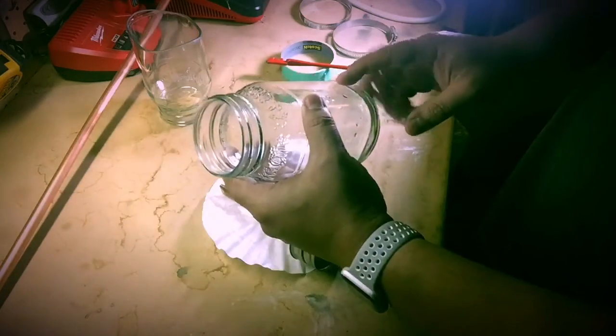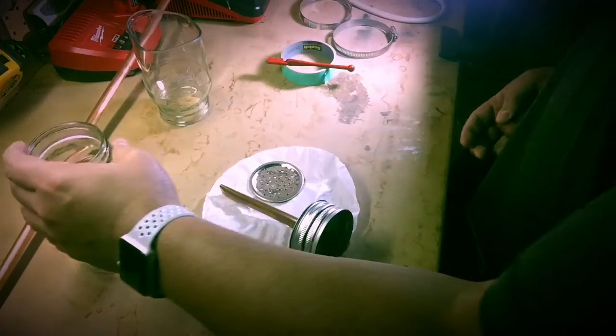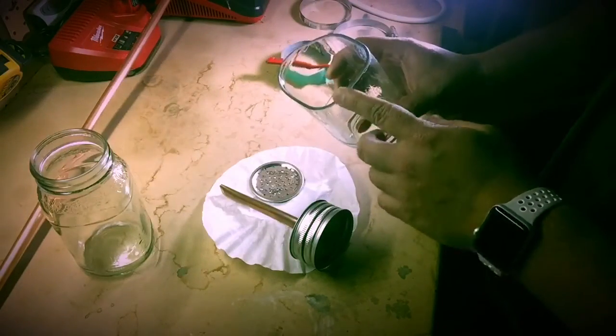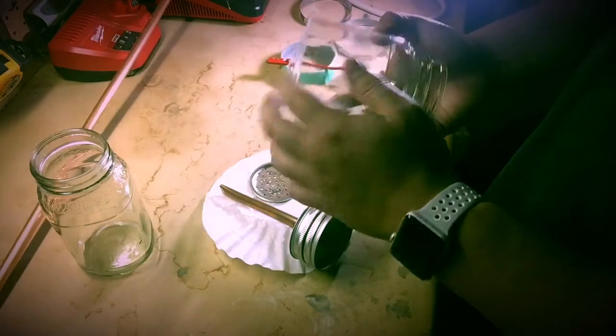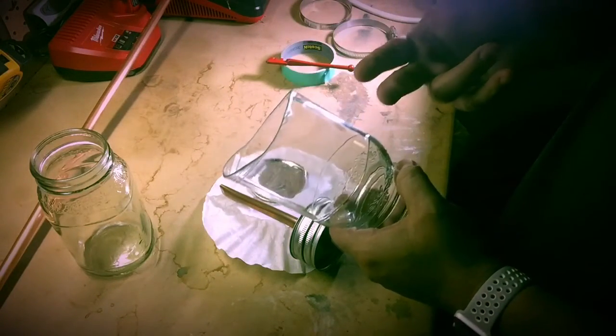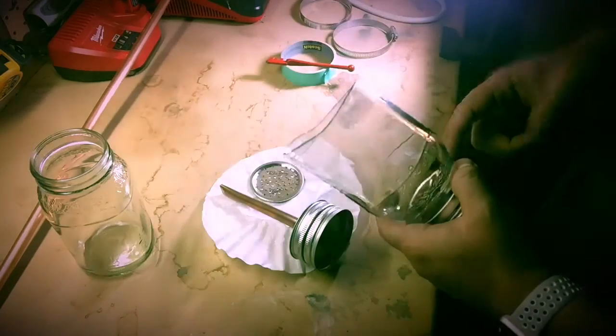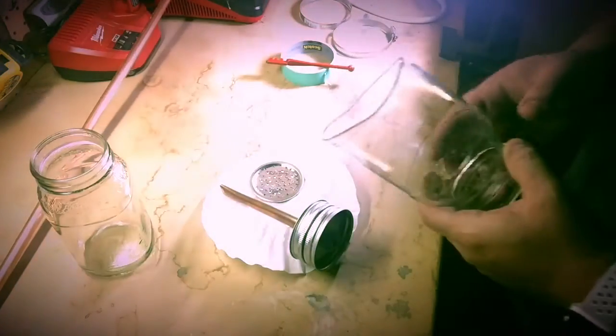So what we have here is a standard mason jar with the standard width. I have another jar here that you can see I've cut the bottom off. This is rather challenging to be honest with you. I know that a lot of times in YouTube videos people don't really explain the mistakes that they've gone through, and I think personally I think it's a mistake. I think people should express that so that folks are not discouraged when they're creating a design or creating a product.